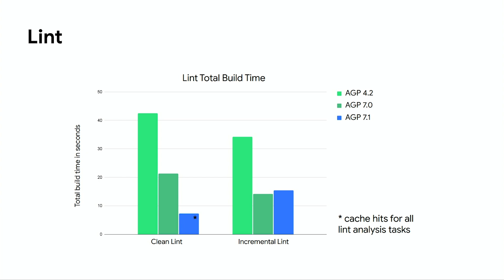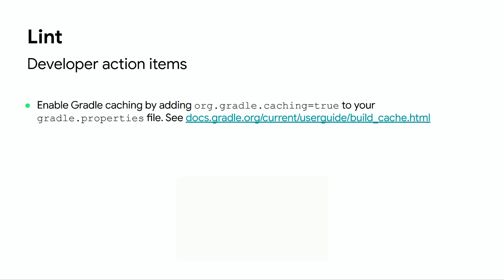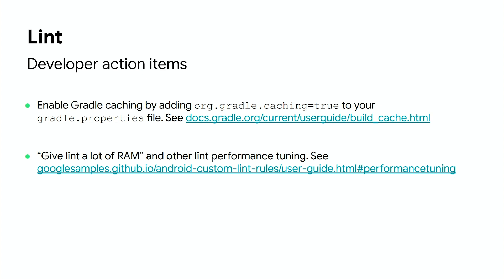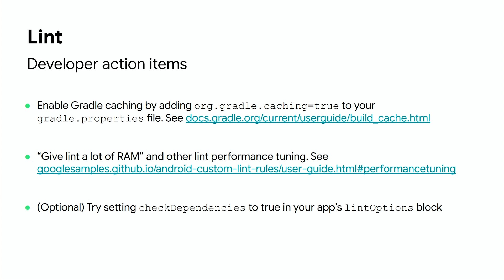To demonstrate the performance improvements, we ran Lint on a project with 15 modules, with check dependencies set to true and Gradle caching enabled. We see about a 2x improvement from AGP 4.2, with an even more dramatic improvement in AGP 7.1 when all the Lint analysis tasks have cache hits. You might see Lint performance improvements without any action on your part after updating AGP, but there are some simple things you can try. To benefit from the Lint analysis task being cacheable, you'll need to have the Gradle build cache enabled by adding this flag to your Gradle.properties file. Another action item is to try the performance tuning in the Android Lint user guide, including making sure you've given Lint enough memory. Finally, try setting check dependencies to true in your application Lint options block. This won't make Lint run faster, but it will allow Lint to catch more issues and will produce a single Lint report for your entire project.